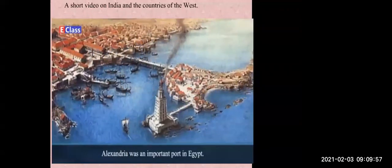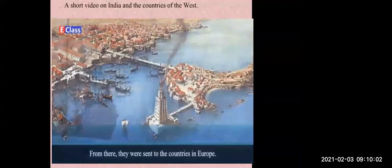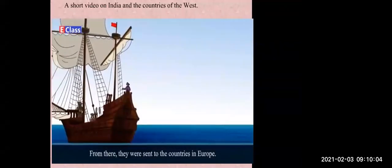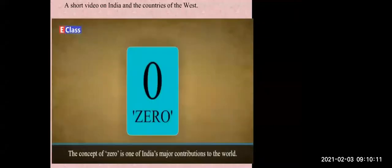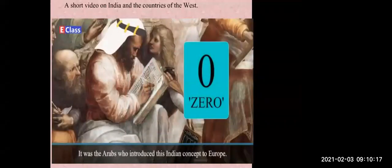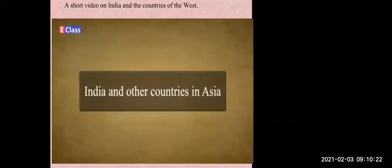Alexandria was an important port in Egypt. Arab merchants carried Indian goods to Alexandria, which were then sent to countries in Europe. Besides Indian goods, the Arabs also conveyed Indian philosophy and science to Europe. The concept of zero is one of India's major contributions to the world — it was the Arabs who introduced this Indian concept to Europe.